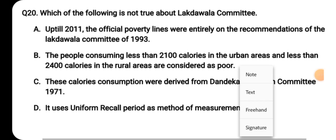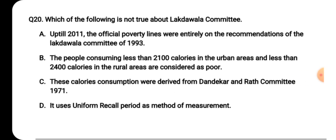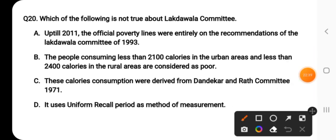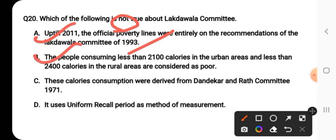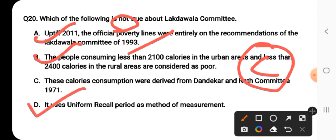Question number twenty — the last question: which of the following is not true about the Lakdawala Committee? Up till 2011, official poverty lines were entirely based on the Lakdawala Committee of 1993 — this is true. People consuming less than 2100 calories in urban areas and less than 2400 calories in rural areas are considered poor — this is correct. The statement that these calorie figures were derived from the Dandekar and Rath Committee of 1971 is wrong — so C is the right answer. The Lakdawala Committee used uniform recall period as method of measurement — that is true.